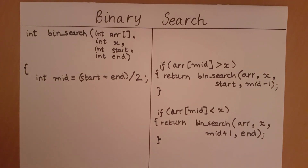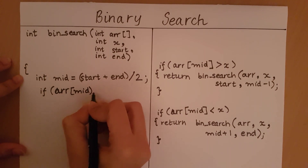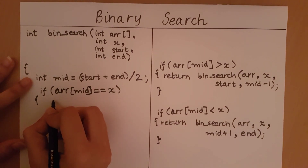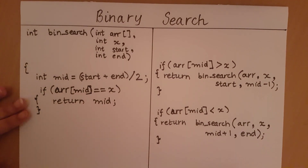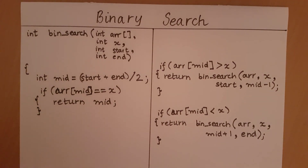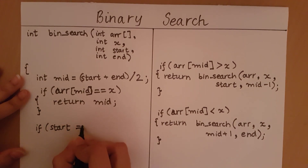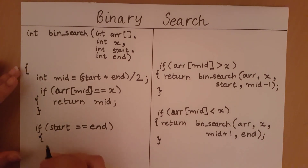Now we look at the other two cases. The first one was if the array of middle is equal to the element. If the array of middle is equal to the element, we know that the element has been found, and we will return the index at which it was found — that is, we will return mid. The other case was if it's going to be the last element. So if start is equal to end, and that element is not equal to the middle element, then we say it is not found and we return minus one.